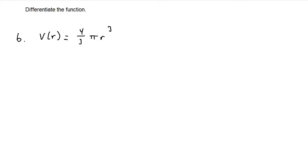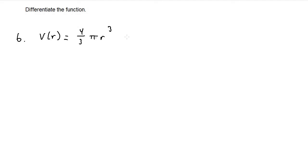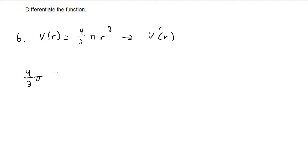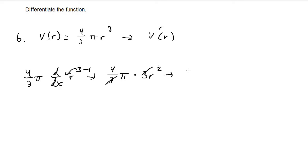For number 6, v of r equals four-thirds pi r cubed. Here r is the only variable; four-thirds and pi are both constants. Taking the derivative, we pull the constant four-thirds pi outside and apply the power rule to r cubed: bring the 3 down and subtract by 1, giving 4-thirds pi times 3r squared. The 3s cancel, leaving v prime of r equals 4 pi r squared.